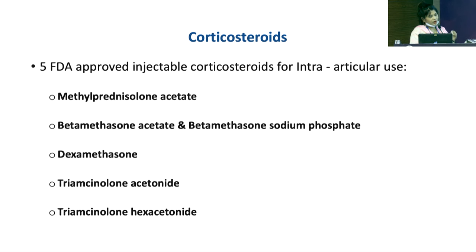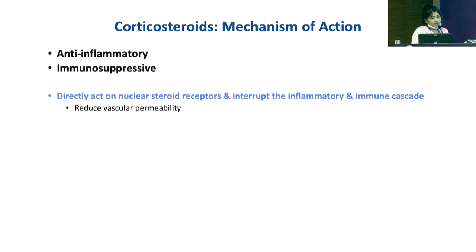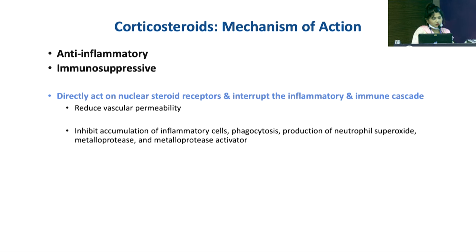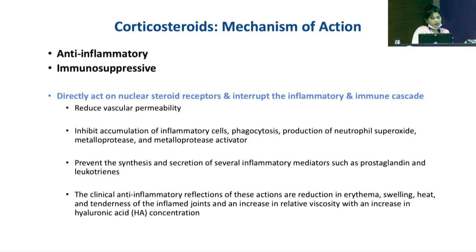There are five FDA-approved corticosteroid drugs: methylprednisolone acetate, betamethasone acetate and betamethasone sodium phosphate, dexamethasone, triamcinolone acetonide, and triamcinolone hexacetonide. The mechanism of action is anti-inflammatory and immunosuppressive — they act directly on nuclear steroid receptors, interrupt the inflammatory and immune cascade, reduce vascular permeability, inhibit accumulation of inflammatory cells, phagocytosis, production of neutrophil superoxide, metalloprotease, and prevent synthesis of inflammatory mediators like prostaglandins and leukotrienes.